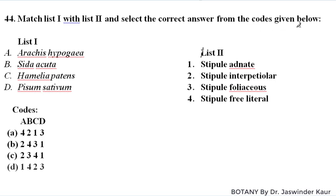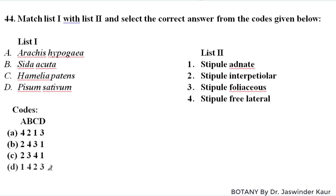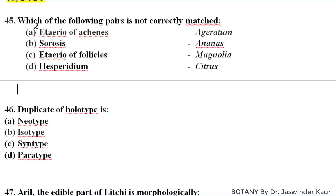Match list one with list two. List one has scientific names of plants and list two has types of stipules. Arachis hypogaea has adnate stipules. Sida acuta has free lateral stipules. Hamelia patens has interpetiolar stipules. In Pisum sativum, the stipule type is foliaceous. The correct code for this is D.